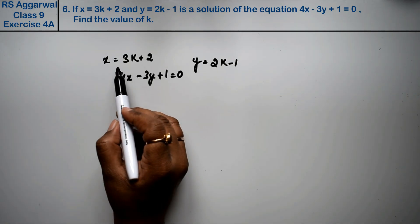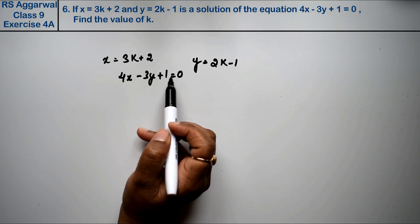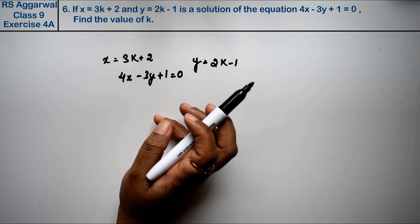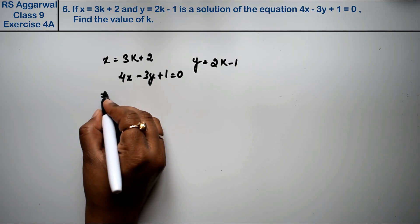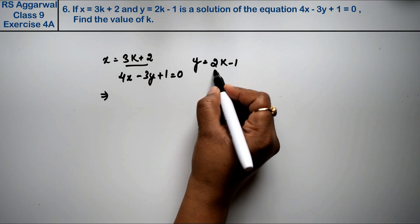This is saying that these two coordinates are the solution, and we have to find the value of k. So what we're going to do is put this value in x and y.